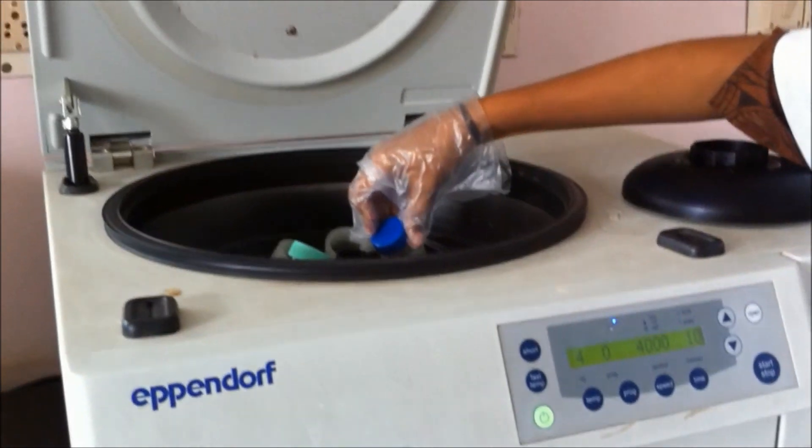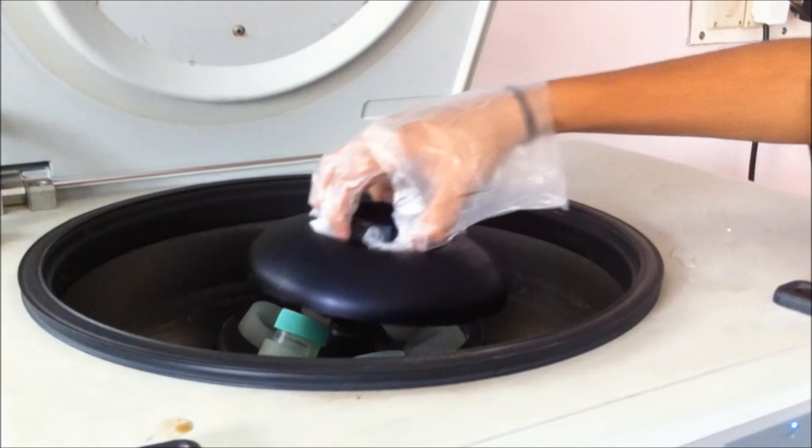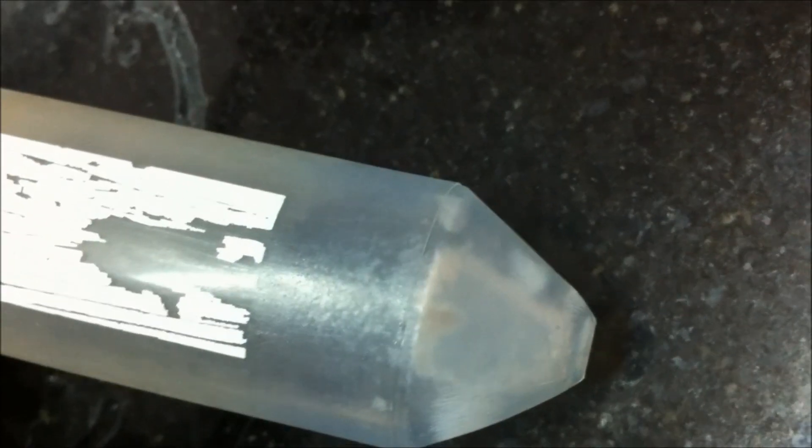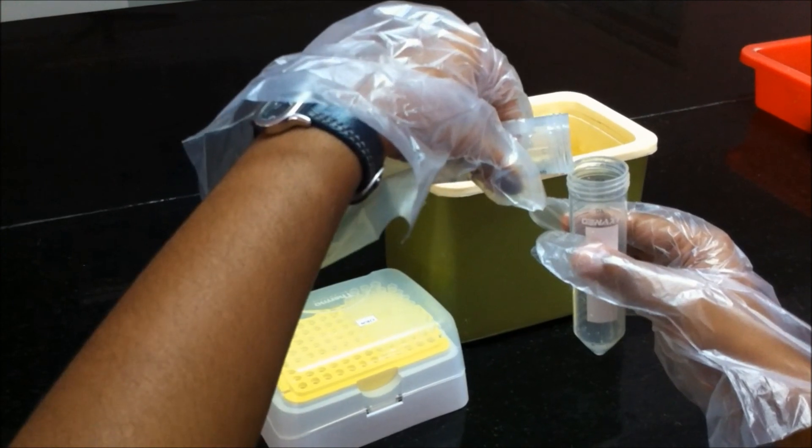Centrifuge at 12,000 rpm for 5 minutes. The supercoiled plasmid DNA and small RNAs remain in the supernatant solution. Hence transfer the supernatant into a fresh falcon tube.